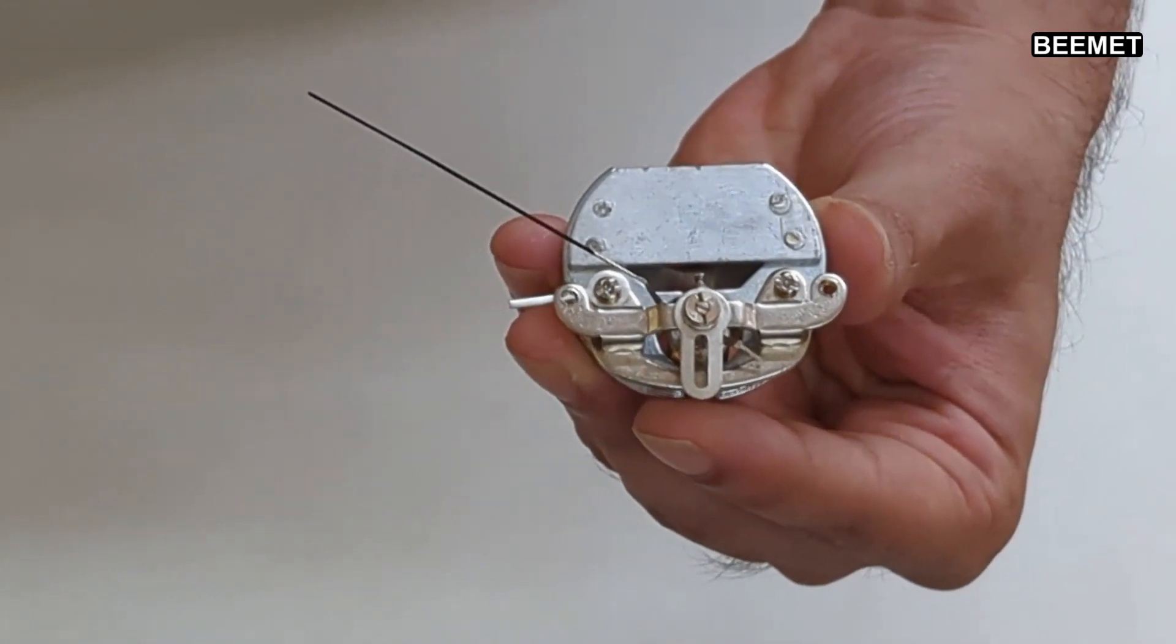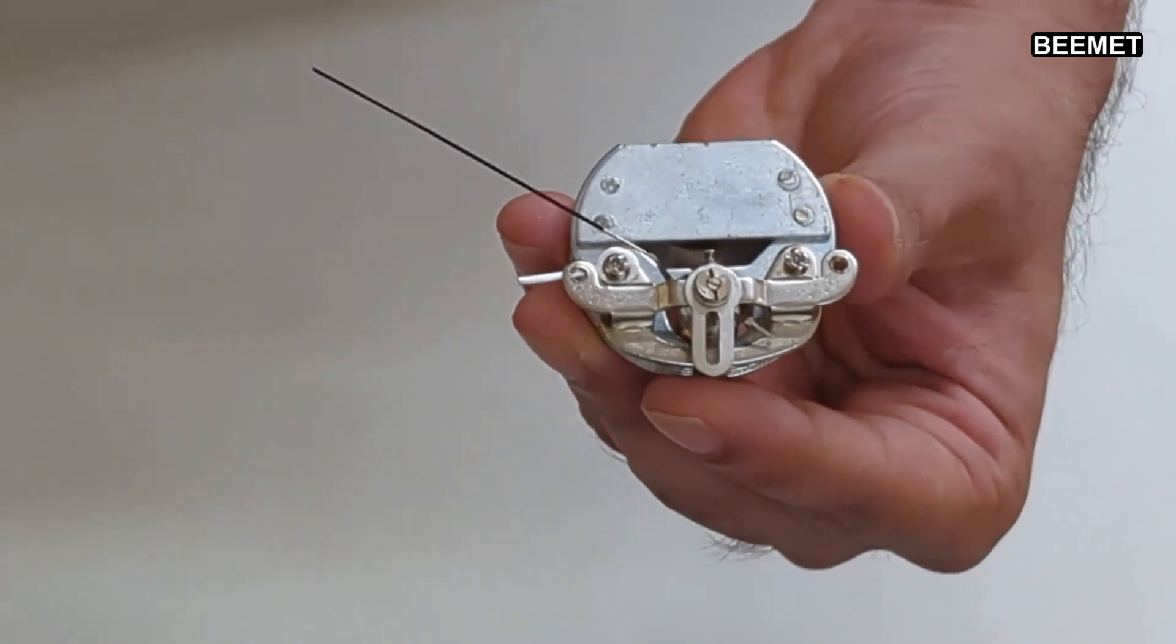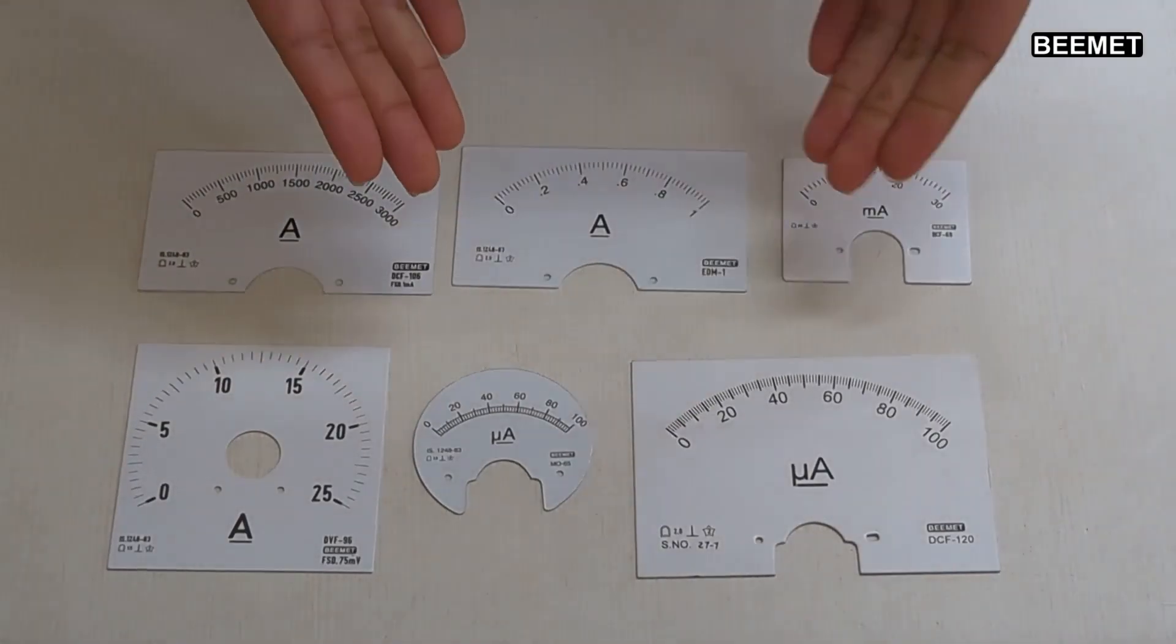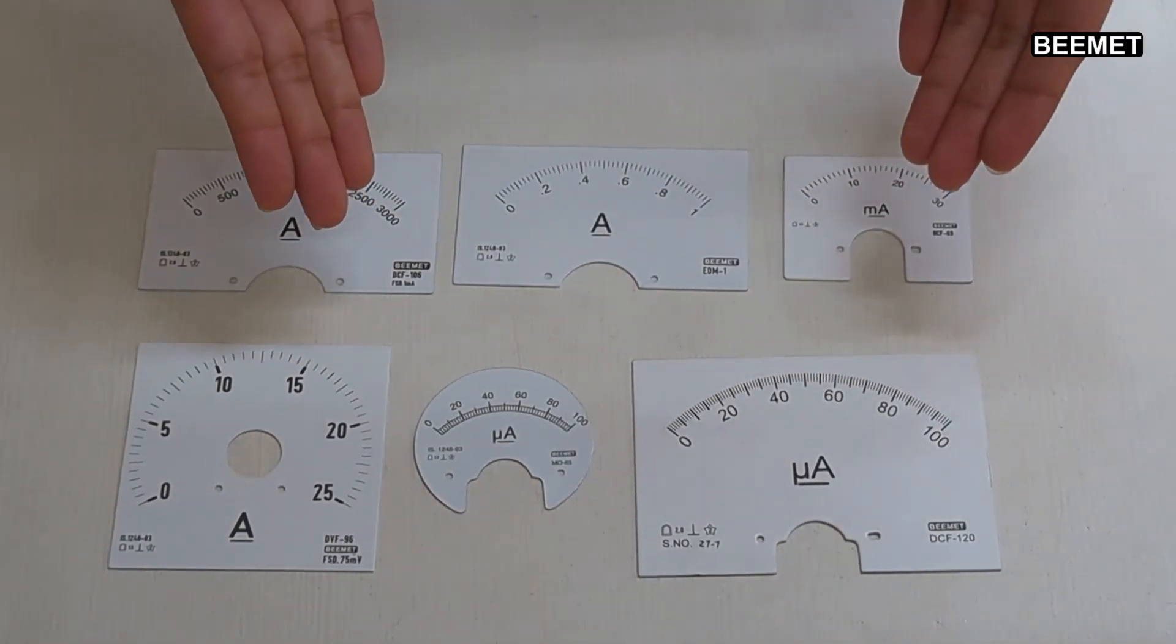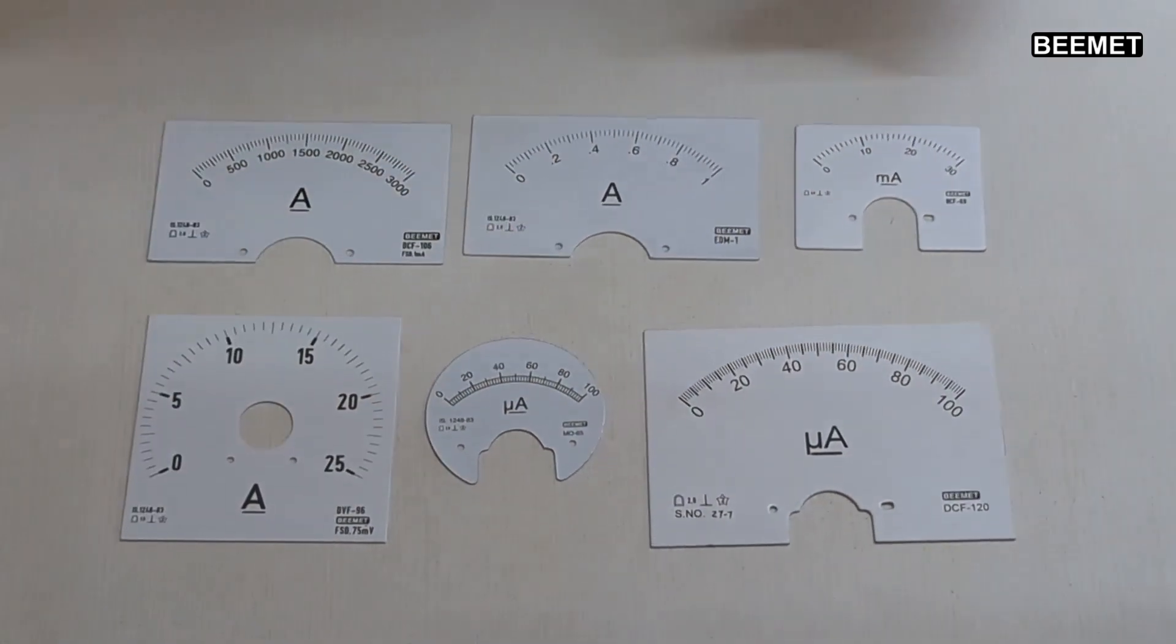The needle pointer inside the ammeter is attached to a moving coil, which is suspended in the magnetic field of a permanent magnet. The scale on the ammeter is marked in units of current, such as amperes, milliamperes, or microamperes.